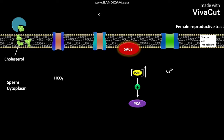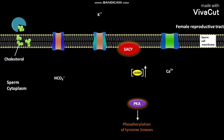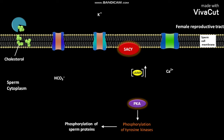The increased concentration of cAMP activates PKA, or protein kinase A. The active PKA causes phosphorylation of tyrosine kinases. The phosphorylation of tyrosine kinases causes the phosphorylation of sperm proteins, which leads to capacitation.